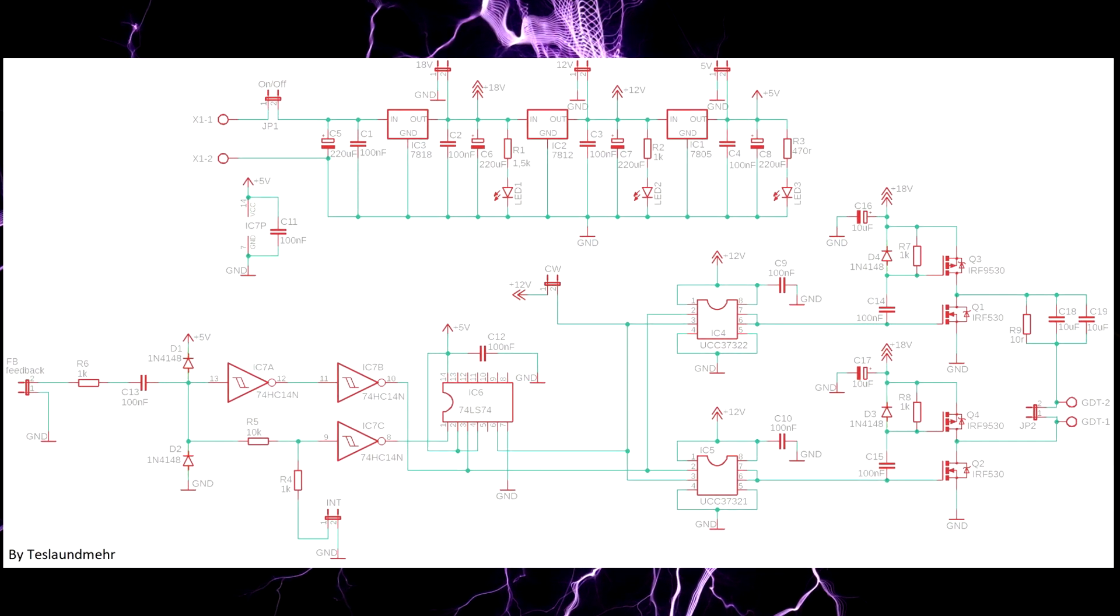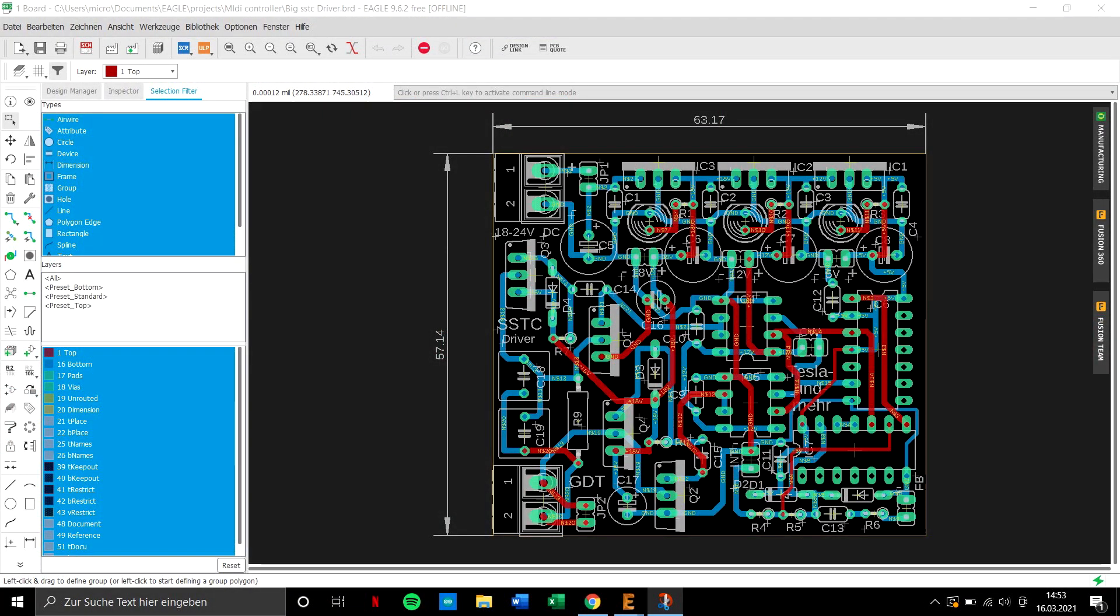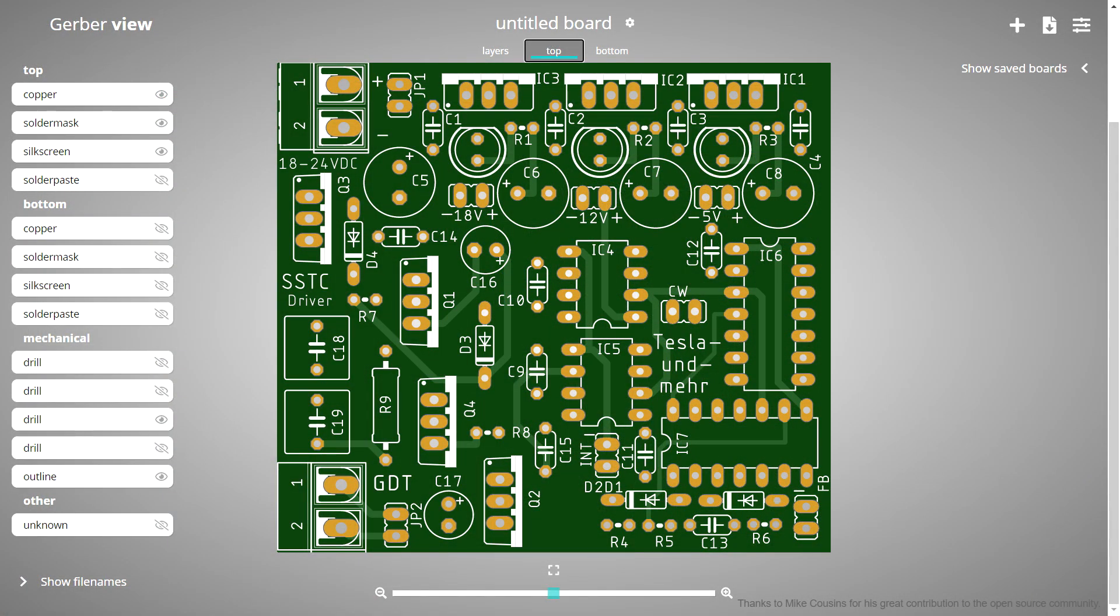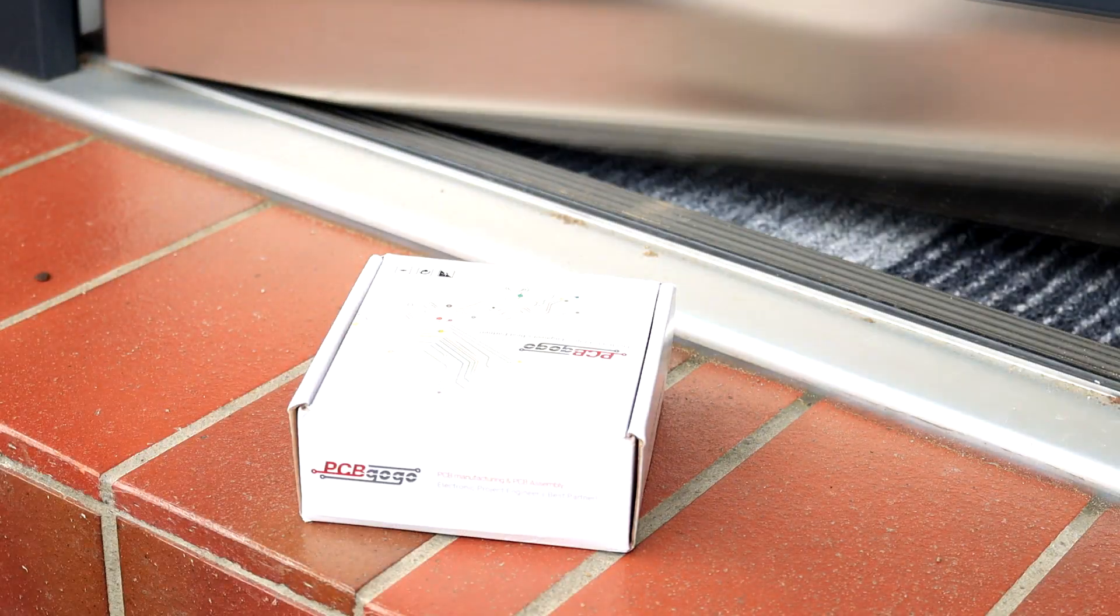We can't do much with the schematic by itself yet. We have to build it too. I used the program EagleCAD to create the PCB for the schematic and order it from the PCB manufacturer PCBGOGO. Five days after ordering the PCBs were already on my doorstep.